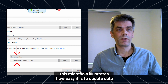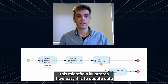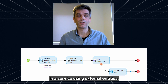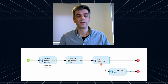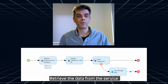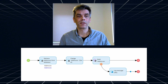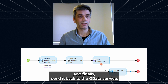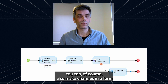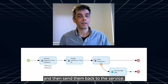This microflow illustrates how easy it is to update data in a service using external entities. Retrieve the data from the service using a normal retrieve activity, then change the objects, and finally send it back to the OData service. You can of course also make changes in a form and then send them back to the service.